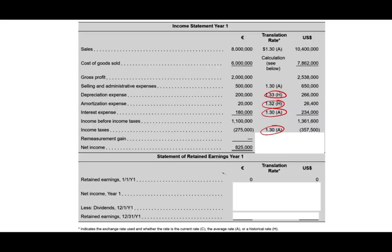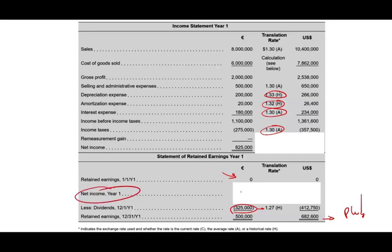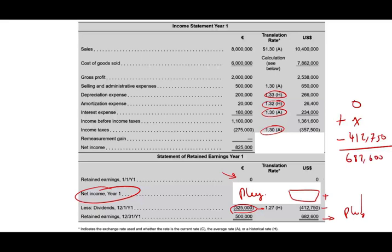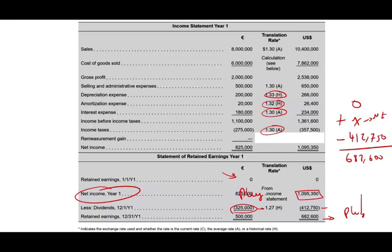Beginning retained earnings is zero in this example. Ending retained earnings is $682,600 — the plug from the balance sheet. Dividends of €325,000 translated at $1.27 gives $412,750 in U.S. dollars. So net income is now the plug: zero plus X minus $412,750 equals $682,600, therefore X equals $1,095,350. That is what net income must be.